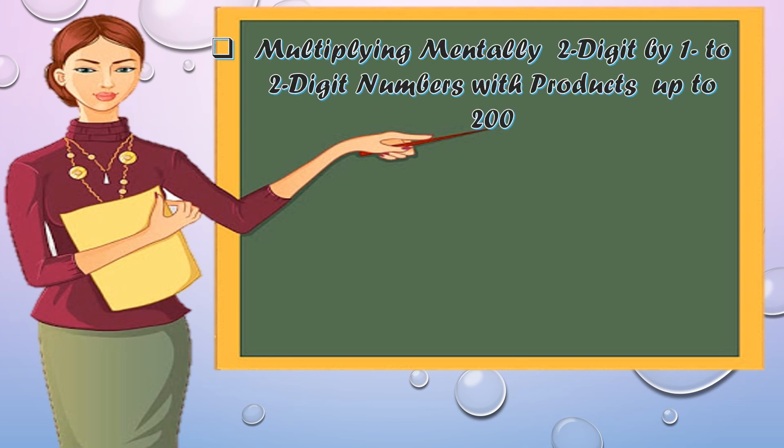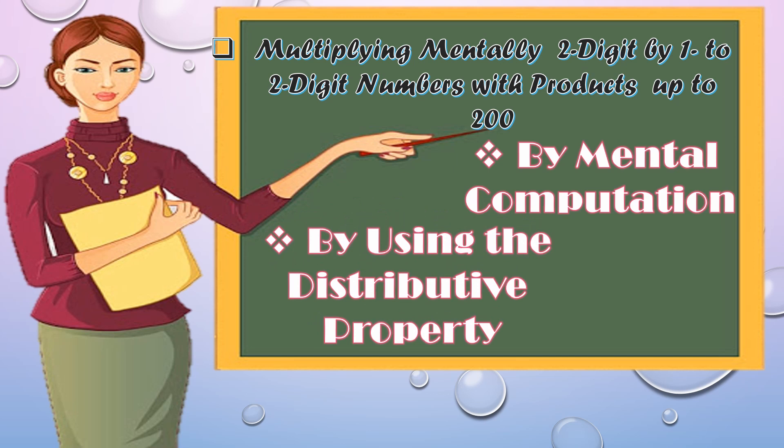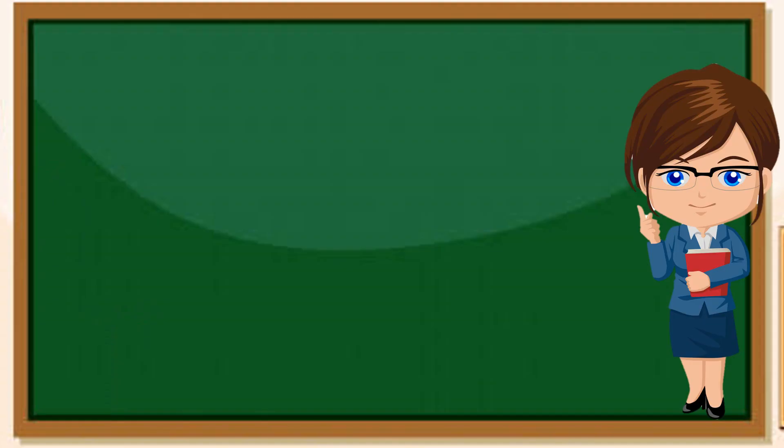Multiplying mentally two-digit by one to two-digit numbers with products up to 200. Ang pagmamultiply mentally ay may dalawang paraan: ito ay ang by mental computation at by using the distributive property. Isa-isahin natin ito.